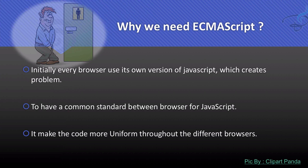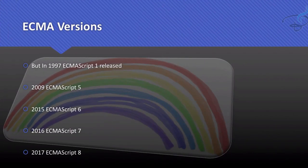ECMAScript makes the code uniform across different browsers, so that if you create something for a particular browser it will look exactly the same in other browsers. Now, what are the ECMAScript versions? In 1995 JavaScript was released, and after two years they realized the need for ECMAScript, so in 1997 they released ECMAScript 1.